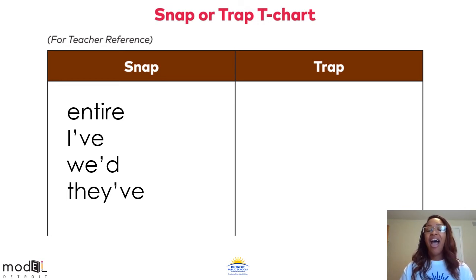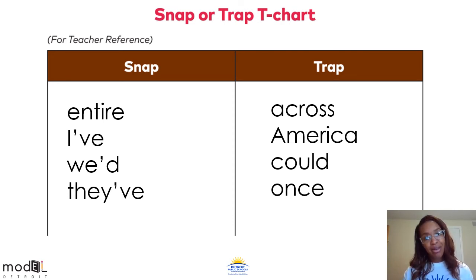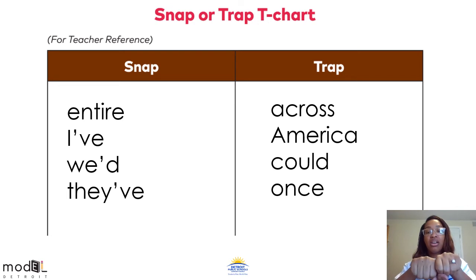However, I have quite a few words on my trap column as well. These words are across, America, could, and want. Let me explain. Our very first word, across, has the schwa sound spelled with an A, which you hear in the first syllable — and it's also a combination of two words: across. The second word, America, also has the schwa sound spelled with an A, and you hear it in two of the word's syllables.